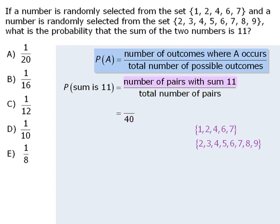Now we'll tackle the numerator. How many of the 40 outcomes are such that the two numbers add to be 11? We can determine this by selecting a number in the first set, and then checking whether there is a number in the second set such that the two numbers add to be 11.